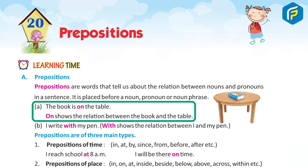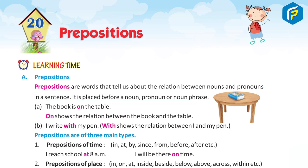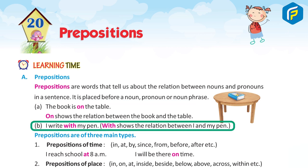Example a: The book is on the table. 'On' shows the relation between the book and the table. Example b: I write with my pen, which shows the relation between 'I' and 'my pen'.